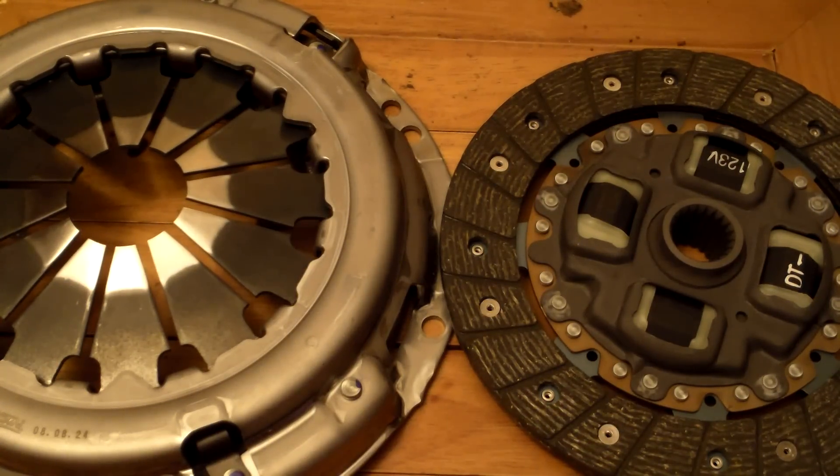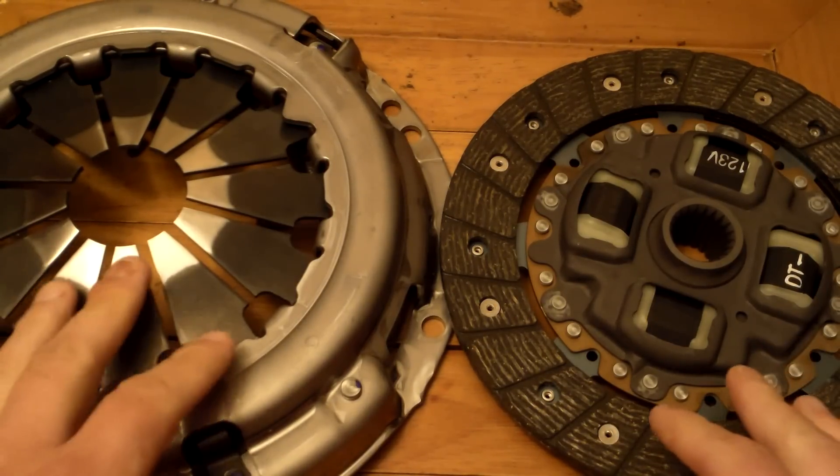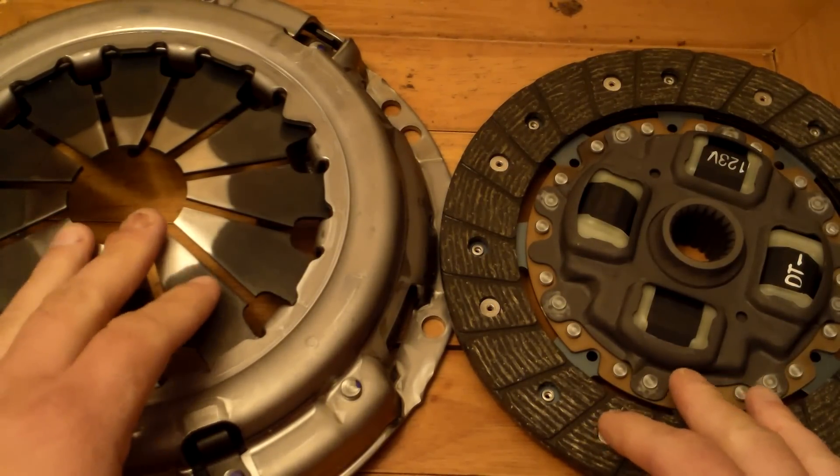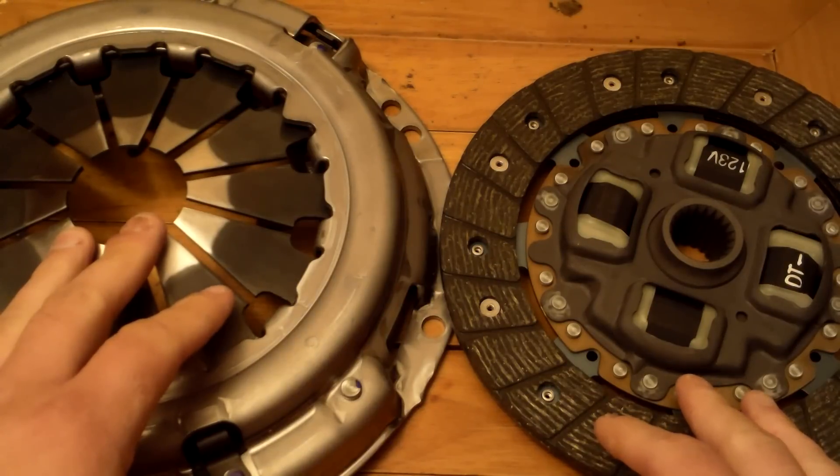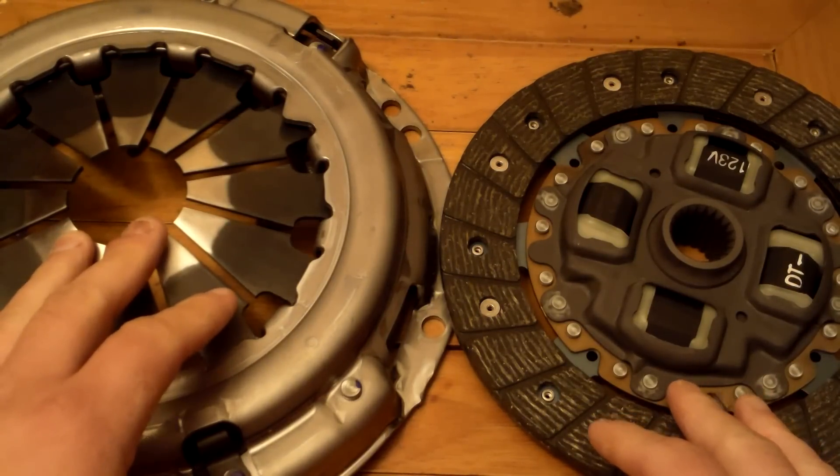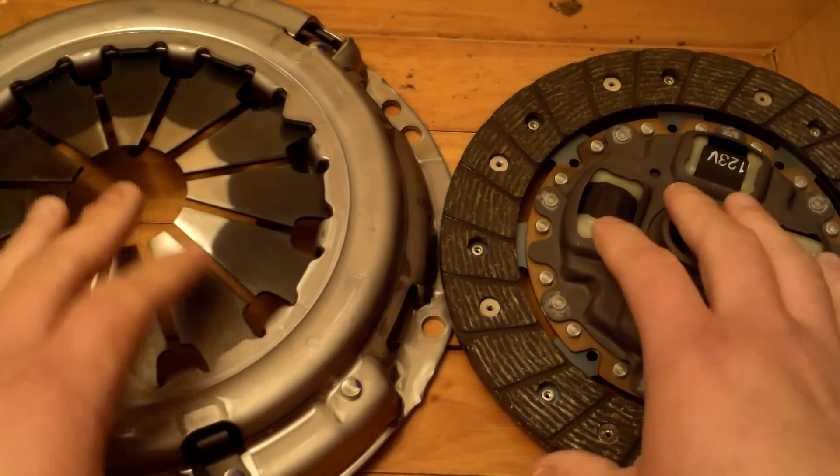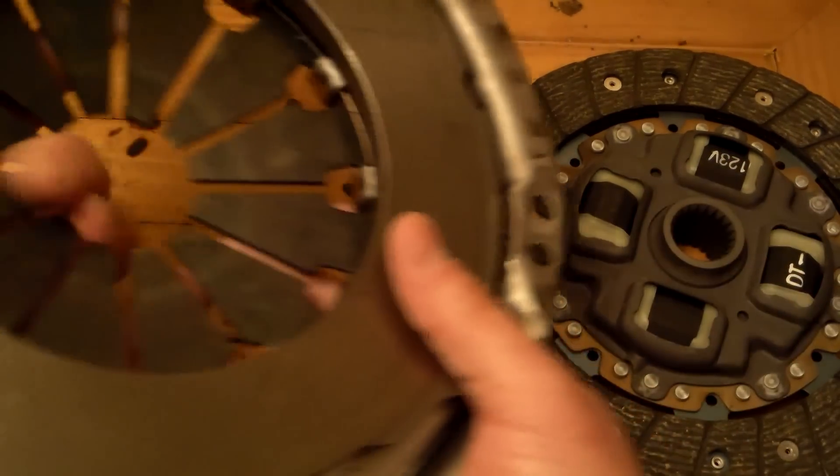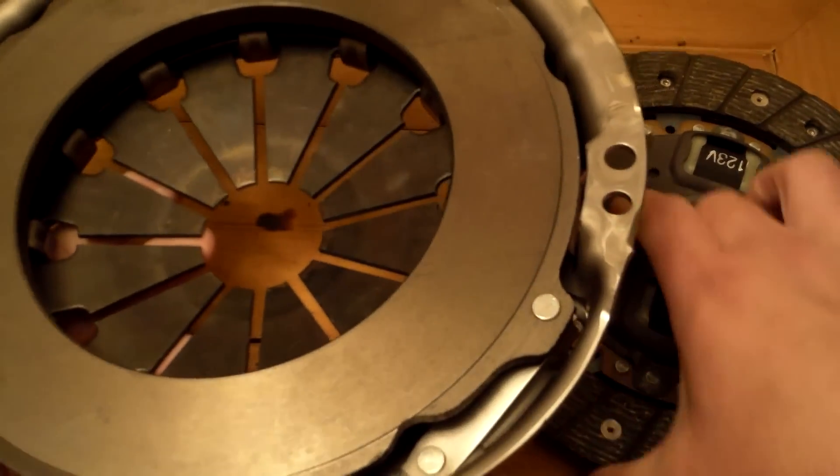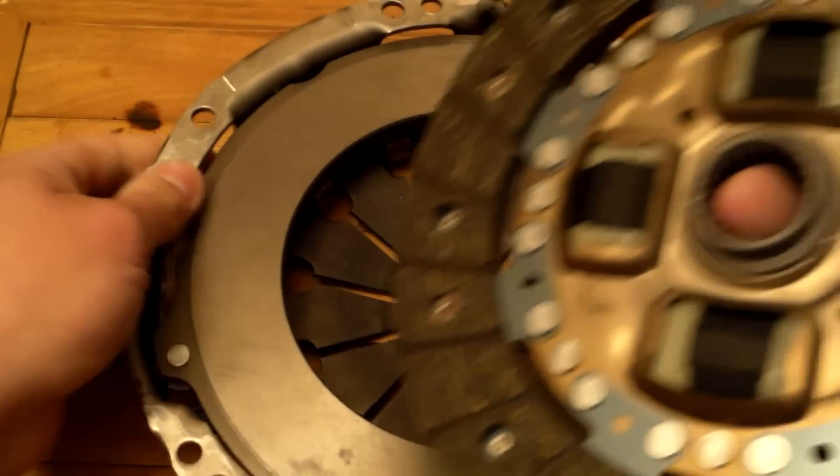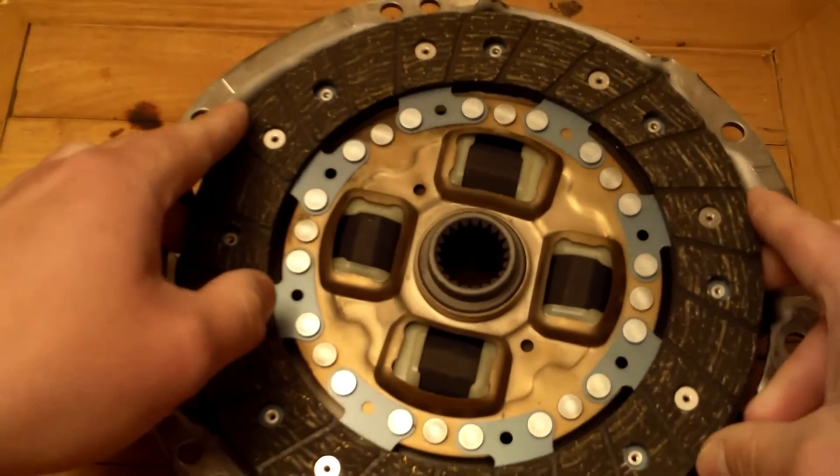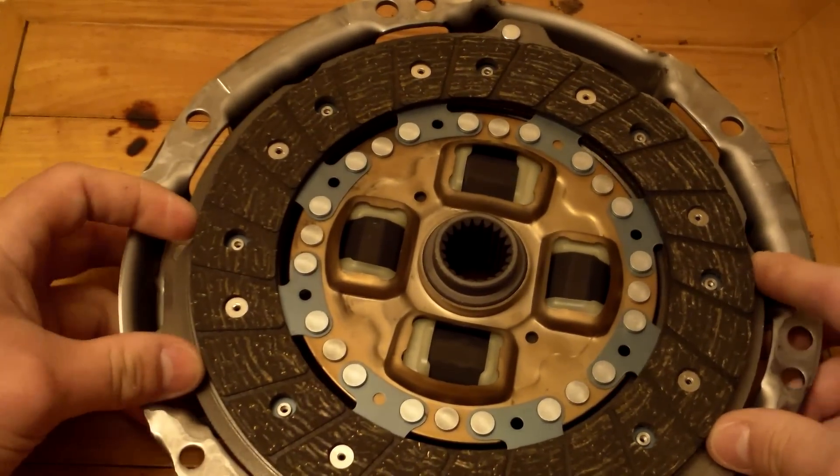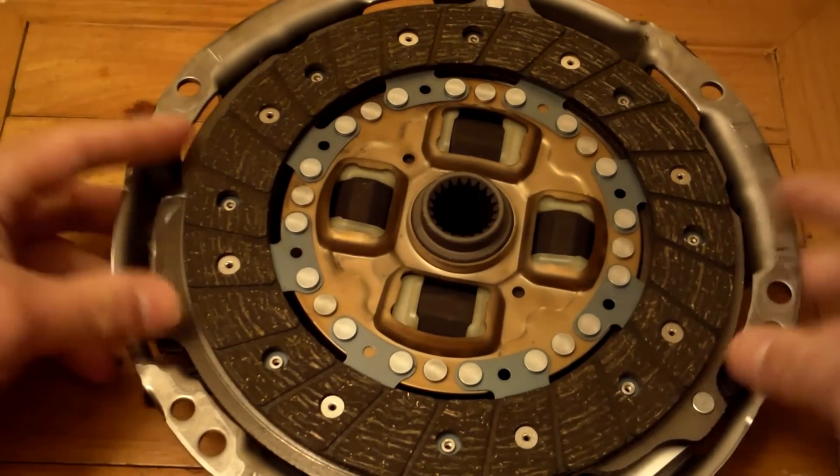In the last video I discussed flywheels. In this video we are going to discuss clutches. This is the OEM clutch for AE86, 4AC or 4AGE, 200mm clutch pressure plate. Flip this over, take this, put that right here. It fits perfectly.